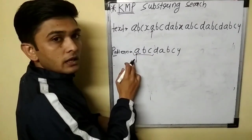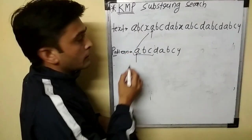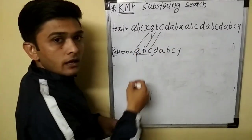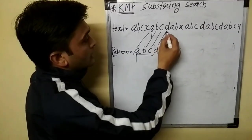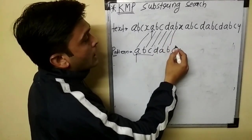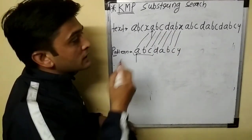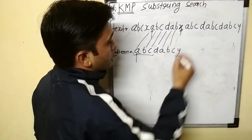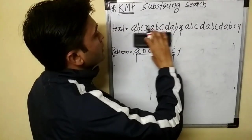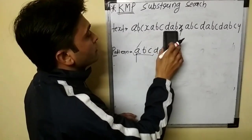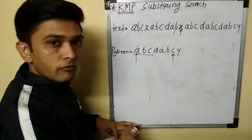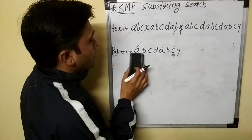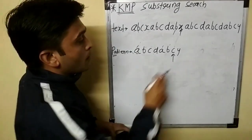Then A is compared with A — match. B with B — match. C with C — match. D with D — match. A with A — match. B with B — match. Then C is compared with X — no match. So we are at this point with no match. We don't want to go backward in the text. We follow the same approach: find the substring in the pattern before the currently mismatched character.